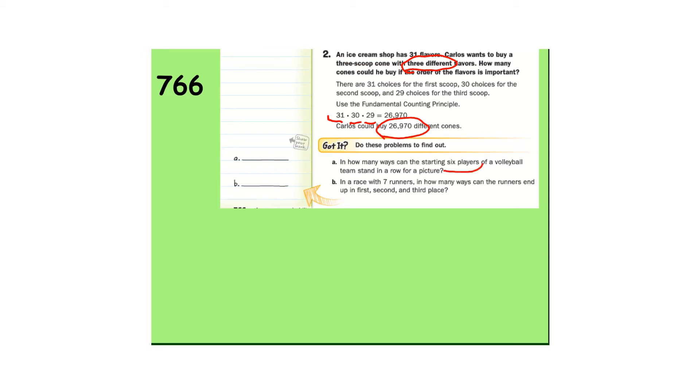Okay, letter A. We have six volleyball players. So there's a choice of six people that could stand in the first spot. That leaves five for the second spot. Four for the third. Three, two, times one. We have 30 times four is 120. 30, 360, 720 different ways. A lot of different ways they could stand in a line for a picture.